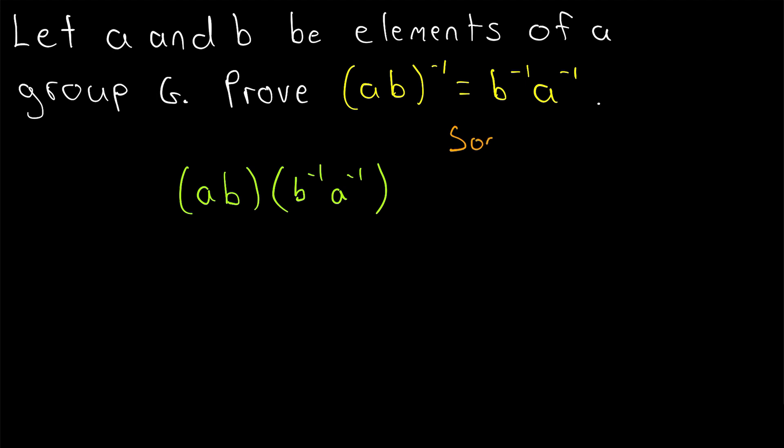Quickly, I just want to mention that this is sometimes called the socks-shoes property, which I think is a cute little name for it. The idea is that if A is putting on your socks and B is putting on your shoes, the inverse of that to take your socks and shoes off, you've got to flip the order around. You've got to take your shoes off first, that's B inverse, and then you can take your socks off.